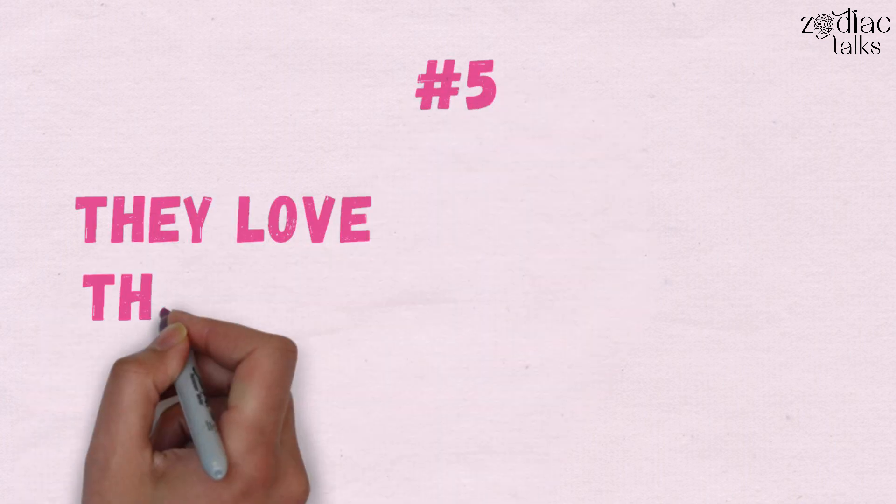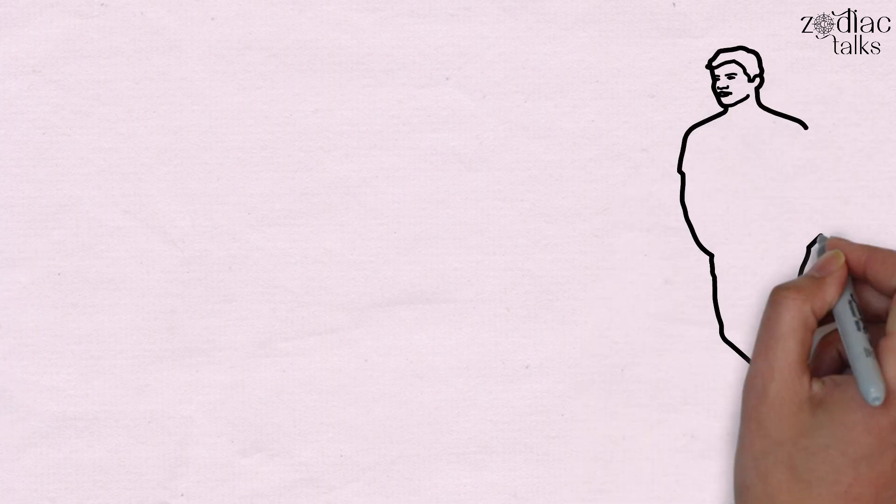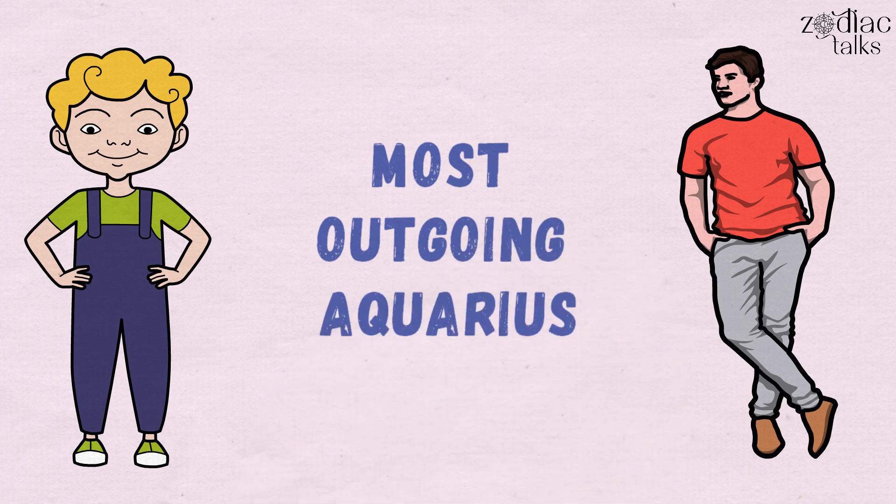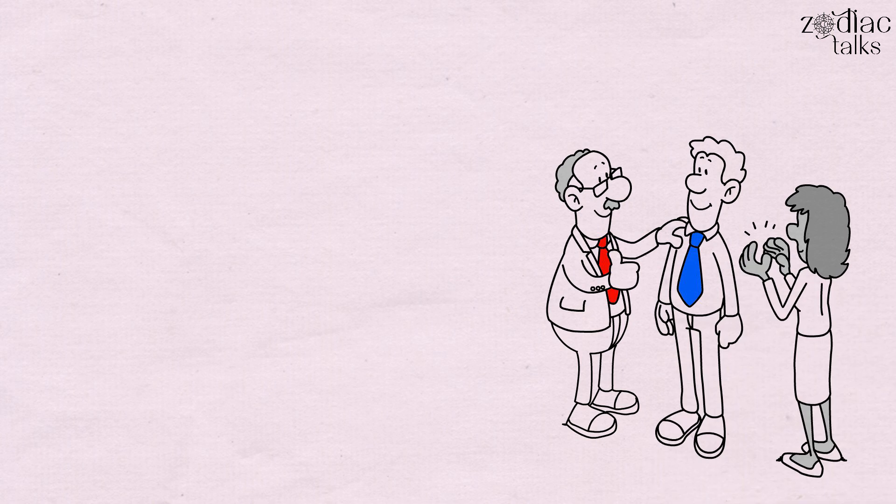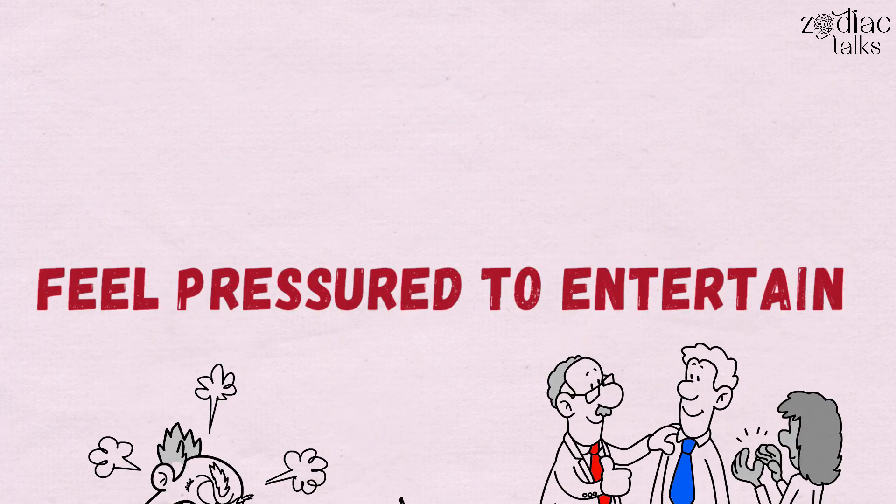5. They Love Their Me Time. They have no trouble spending time alone because they like and find themselves interesting. Even the most outgoing Aquarius enjoys some alone time now and then. If they're constantly surrounded by other people or feel pressured to entertain, it's very easy for them to become irritated or cranky.